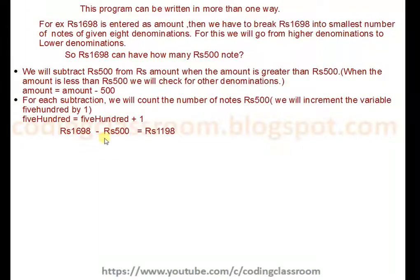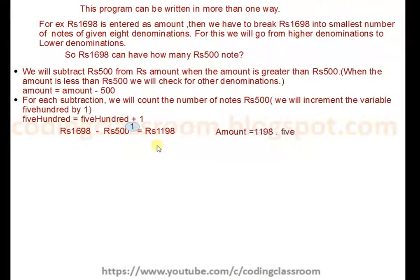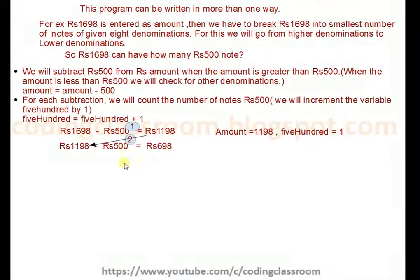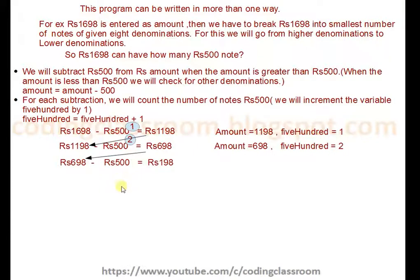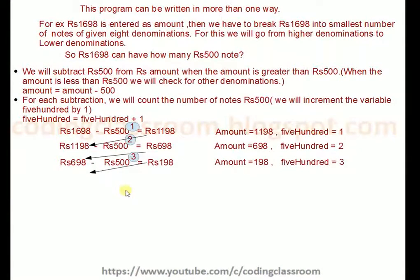If rupees 1698 is the amount, we get one rupees 500 note and the leftover amount is rupees 1198. We take this amount again and subtract rupees 500 because this amount is greater than 500. We get the second note of rupees 500 and the amount becomes rupees 698. Again it's greater than 500, so we subtract again and we get rupees 198 and the third note of rupees 500. Now rupees 198 is not greater than 500 but is greater than 100.